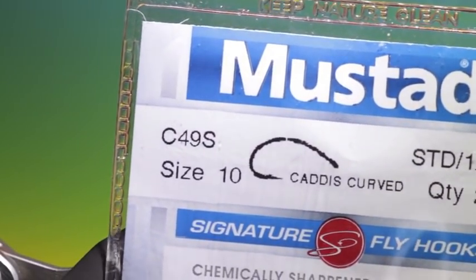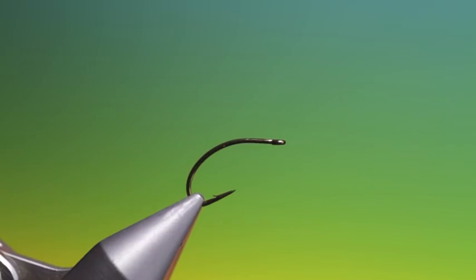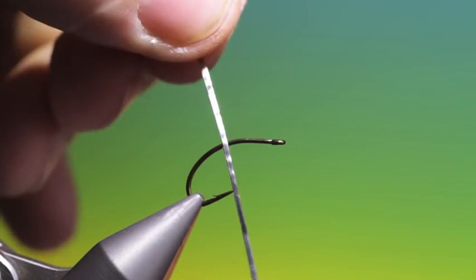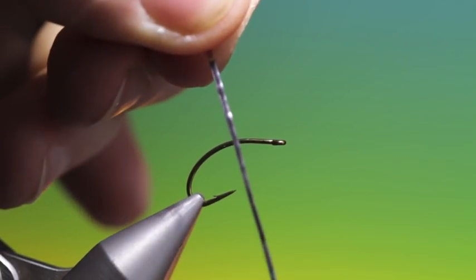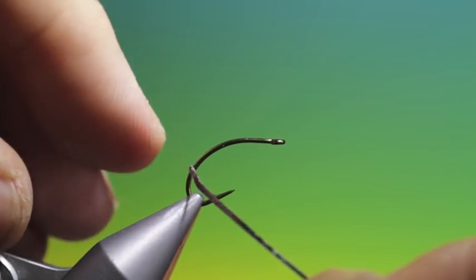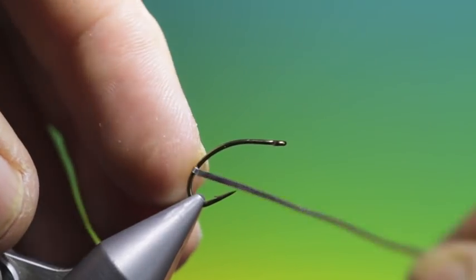Okay we'll start with the Mustard C49S size 10. What we need is a piece of adhesive lead wire or tape so we just put that on at the tail.